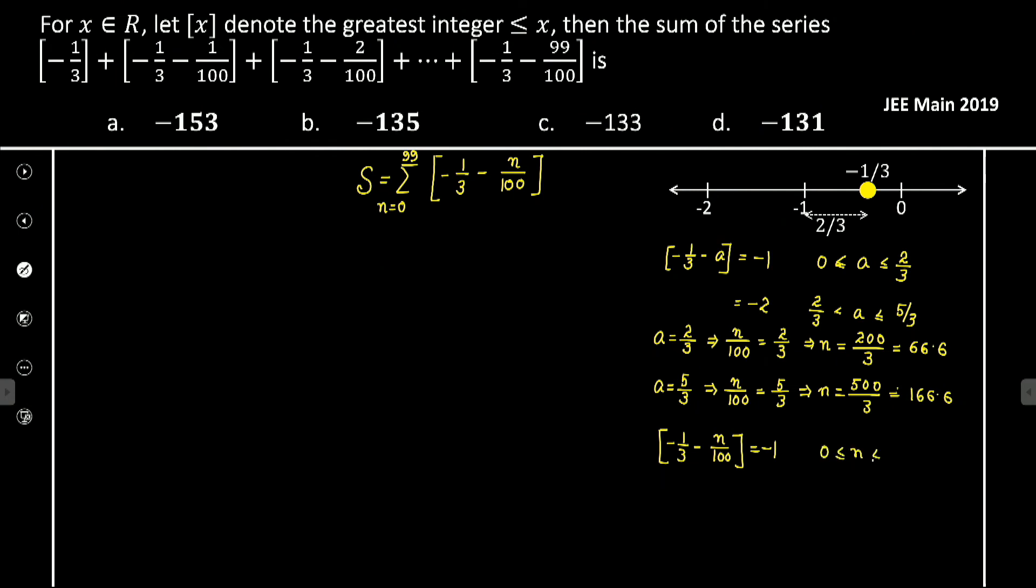It equals minus 2 if it lies between 67 less than or equal to n less than or equal to 166.